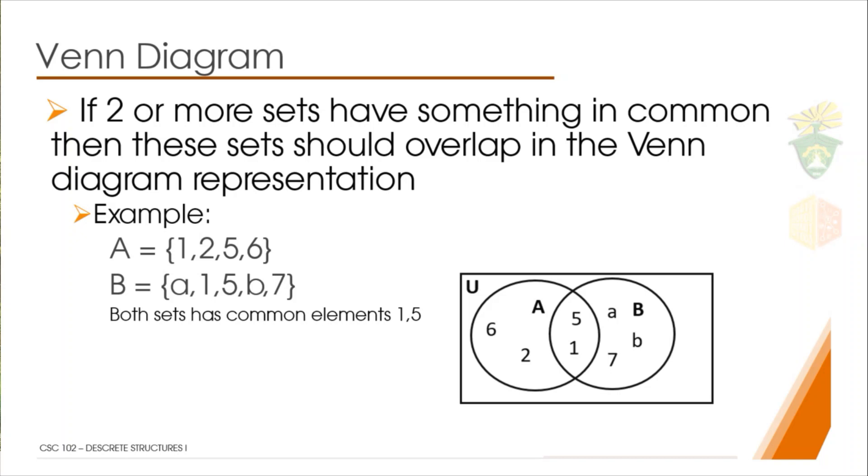Those that are not in the overlap are those elements that are exclusively just found in the sets, like 6 and 2, which only exist in A, and a, b, and 7, which only exist in set B.